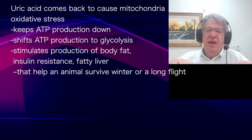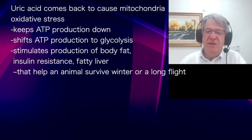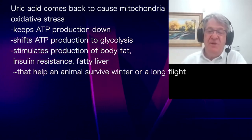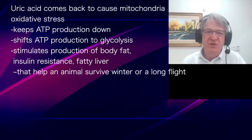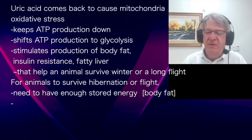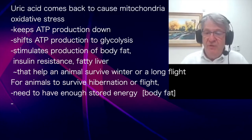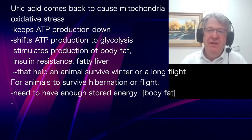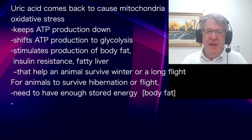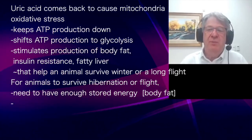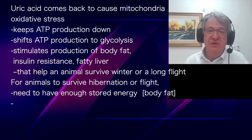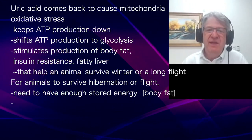The uric acid goes into the mitochondria and causes oxidative stress that keeps ATP production down. This shifts energy production to glycolysis — a system that doesn't require oxygen — and also stimulates fat production, insulin resistance, and a series of processes that help animals survive. To survive, you need enough energy; if there's no food, you live off stored fat. Animals want to carry some fat as a reserve for when food is scarce, such as during a storm or prolonged fasting period.